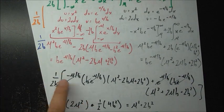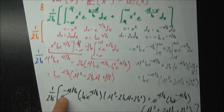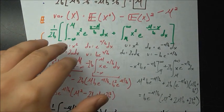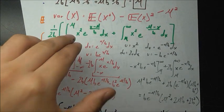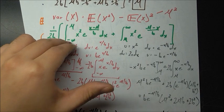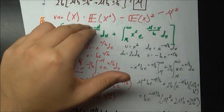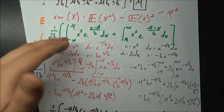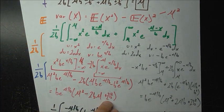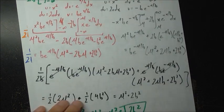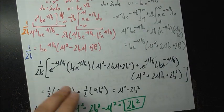After carrying through all the simplifications, we get that E[X squared] equals mu squared plus 2b squared. And remember — do not forget to subtract off the mu squared from the variance formula.